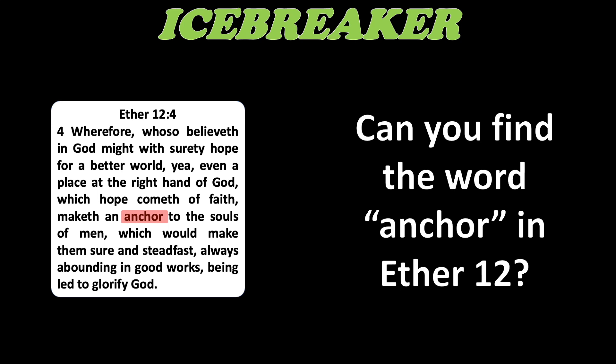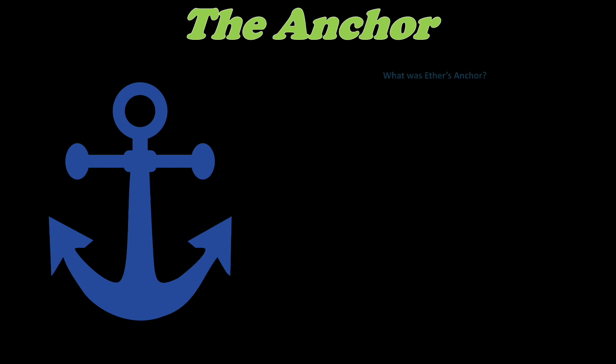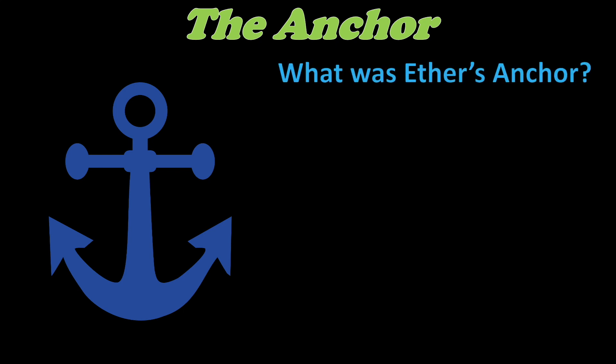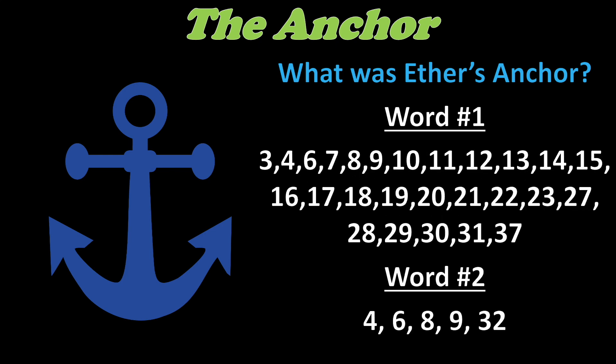Shining out of this bleak setting comes the ray of light that is Ether chapter 12. These two prophets are going to teach us how to get through turbulent and wicked times. So what was this anchor that Ether talks about in verse 4? I'm going to label it with two words that really dominate this chapter. The first word shows up 35 times in the chapter — the word is faith. And then word number two, which doesn't appear as much but is equally significant — that word is hope.